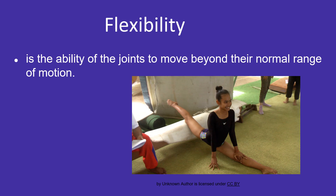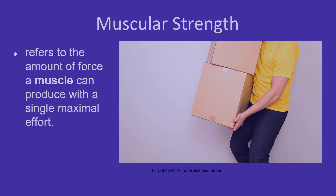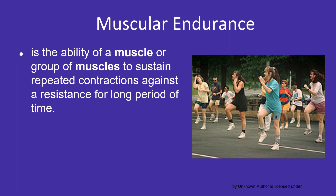Flexibility is the ability of the joints to move beyond their normal range of motion. An example of a sport that shows flexibility is gymnastics. Muscular strength refers to the amount of force a muscle can produce with a single maximal effort — one good example is weight lifting. Muscular endurance is the ability of a muscle or group of muscles to sustain repeated contractions against a resistance for a long period of time — one good example is doing push-ups.